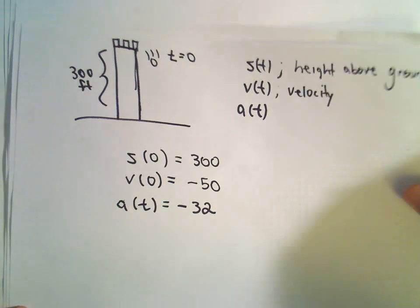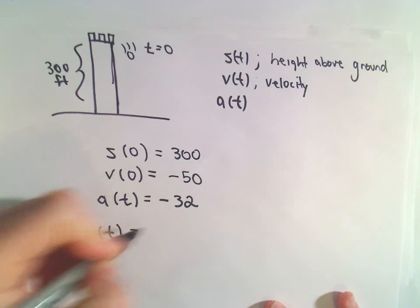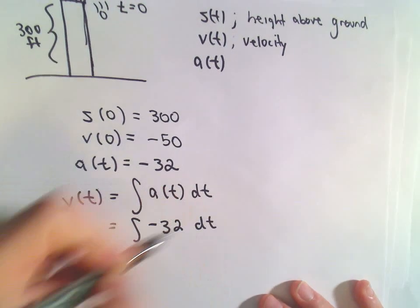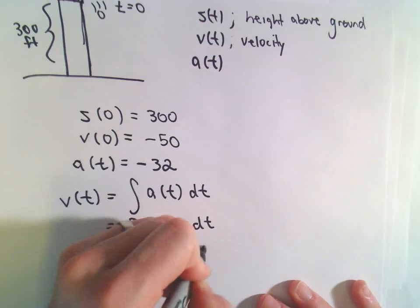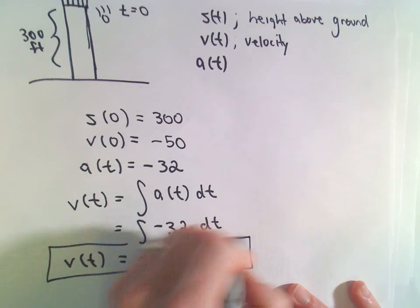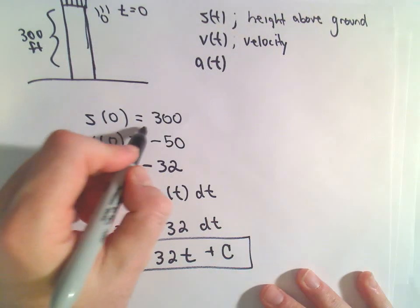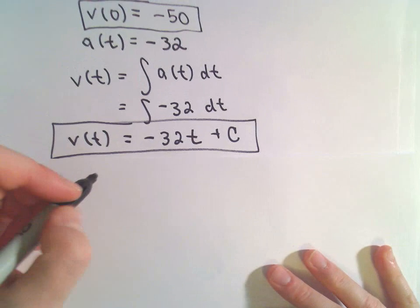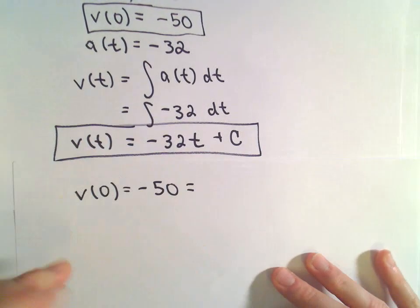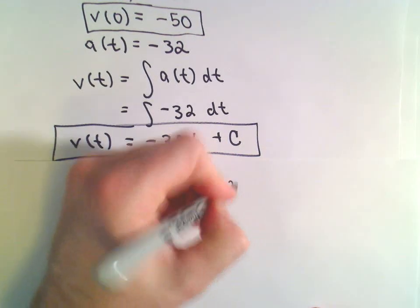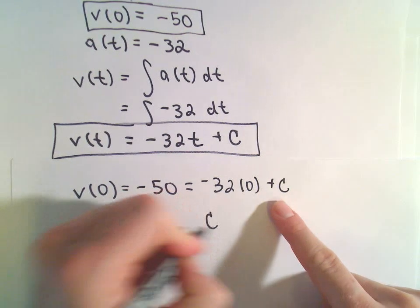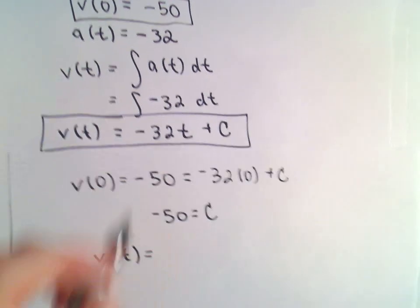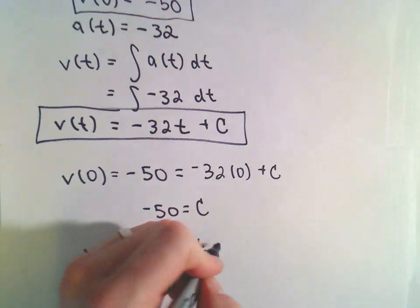To get the velocity equation, we simply integrate the acceleration equation. We find the antiderivative of negative 32 dt, which gives us negative 32t plus C. Now we solve for C using our initial condition for velocity: V(0) = -50. Plugging in t equals 0, we get C = -50. So our velocity equation is V(t) = -32t - 50.